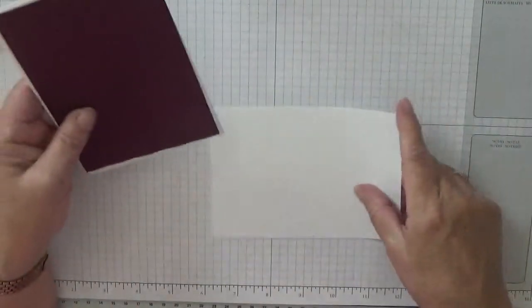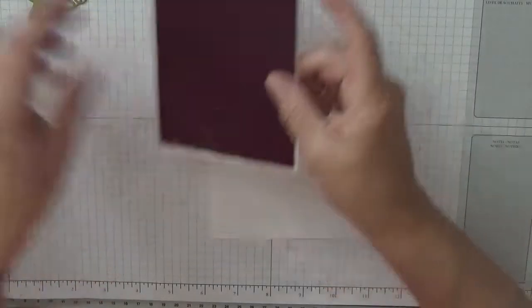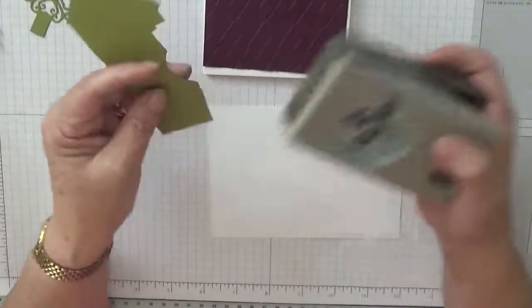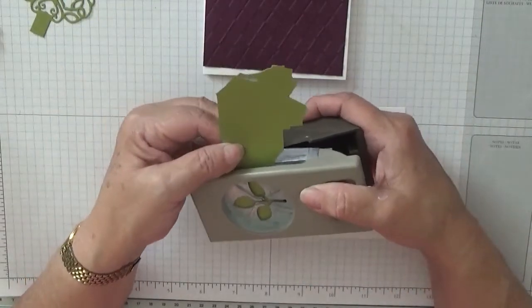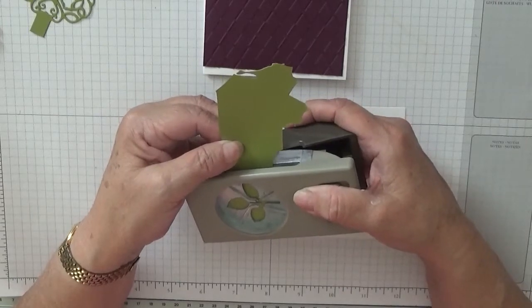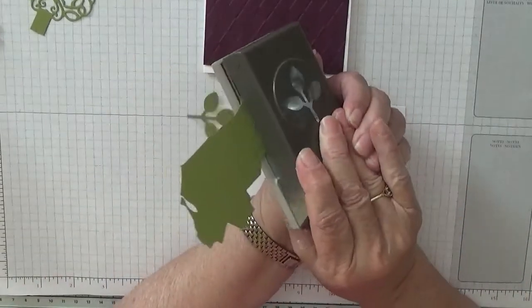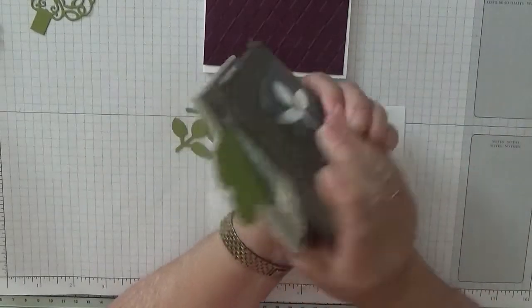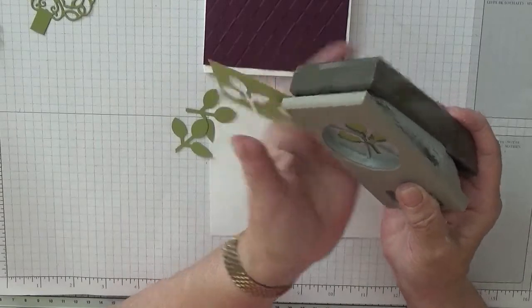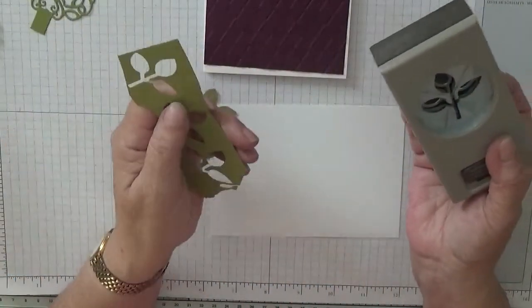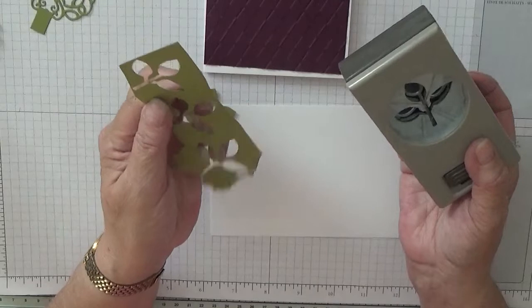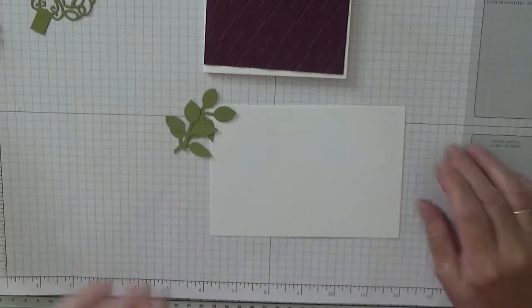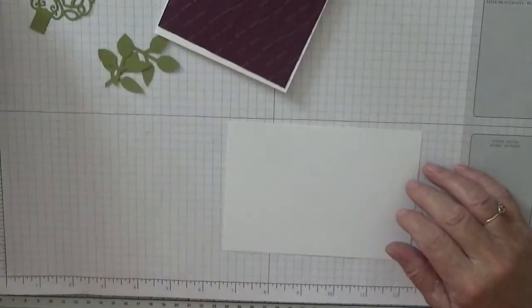This will do for the daisies. I've got a scrap of Old Olive. I might as well do them now and pray that I can get three leaves out of this because I've got no more. Yeah, was it three? That was four. Will do with three.